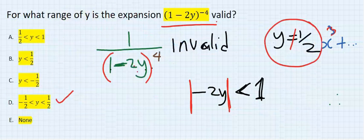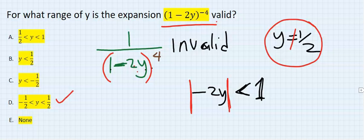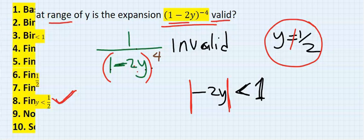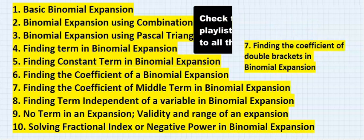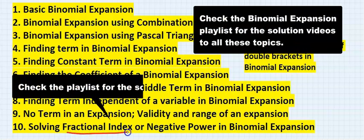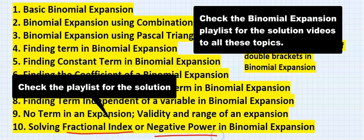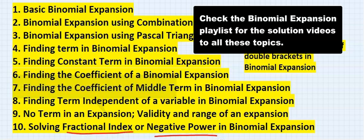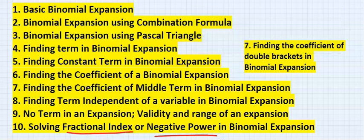However, in this question we were not asked to expand the bracket — we were just asked to find the range at which this expansion is valid, which is D. In our next video we are going to look at fractional index and negative powers, which we have briefly seen here. I will see you in the next video.